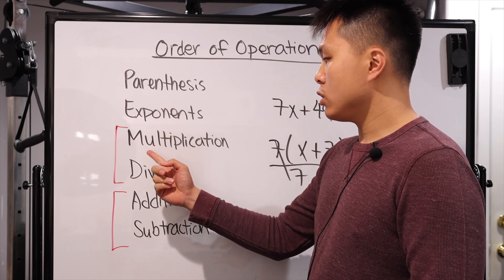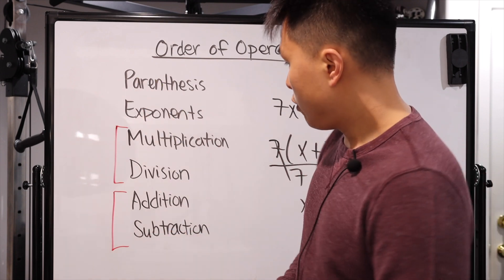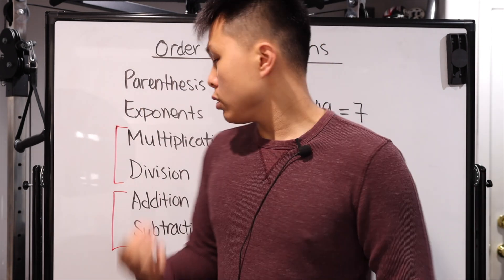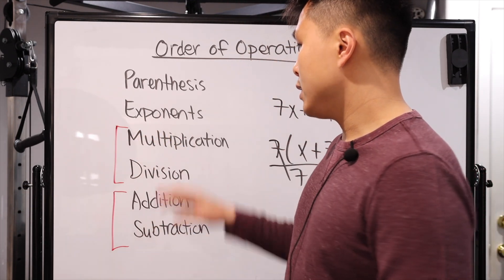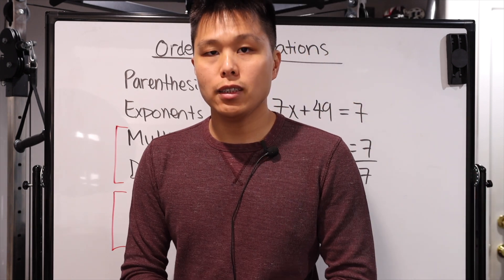Parentheses, exponent, multiplication, division, addition, and subtraction based on the first letter of each. Also known as PEMDAS. Now, for multiplication and division, don't forget left to right. Addition and subtraction, left to right. It's not all strictly multiplication then division, or all strictly addition and then subtraction.